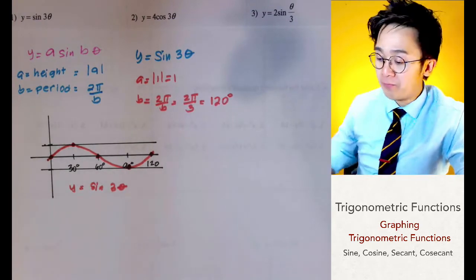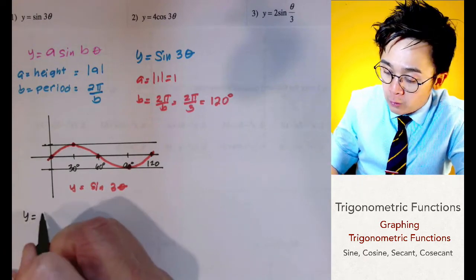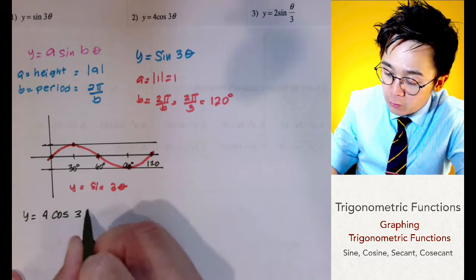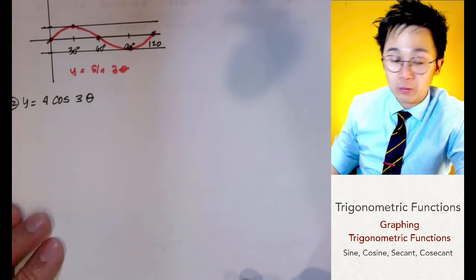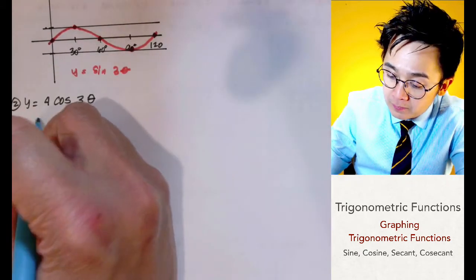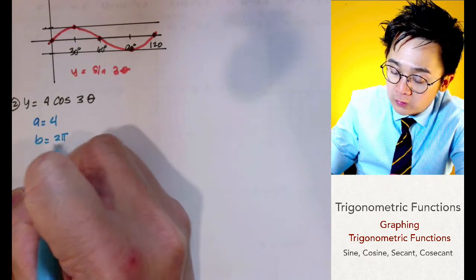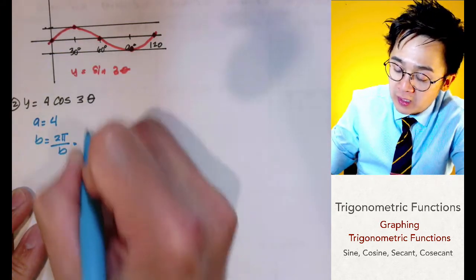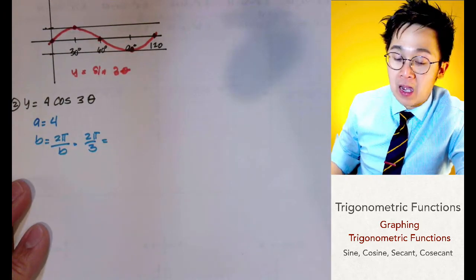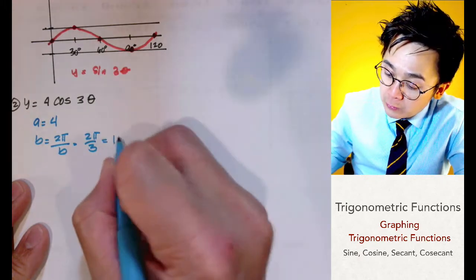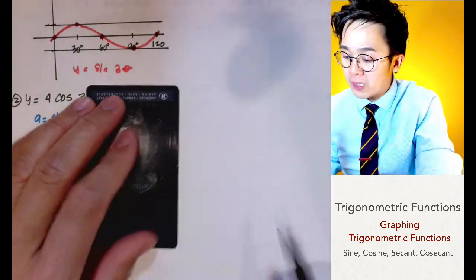Now let's find the graph of problem number two, which is y equals 4 cosine three theta. Here a equals 4 and the period is two pi all over b, where b equals three. Notice that the period is the same as our first function — 120 degrees — so we proceed to graphing the cosine function with amplitude 4.